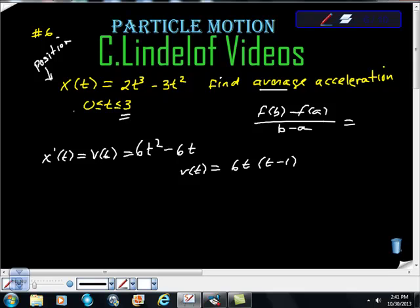Because what I want now is they gave us this interval and they want to know what the average rate of acceleration is between here and here. So I'm going to use this formula up here, and I'm going to take x of 3 minus x of 0 over 3 minus 0.